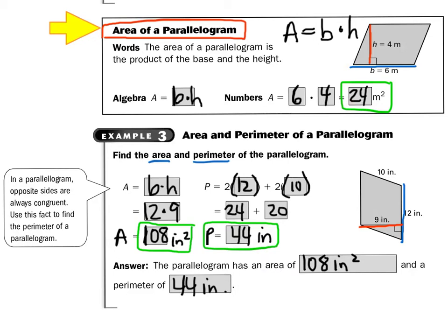Take a look at example three: area and perimeter of a parallelogram. Here's our parallelogram. For the area, it's base times height. The base — in blue — is 12, and the height — in red — is 9. I know the base and height because I look for that right angle symbol. So the area is 12 times 9, which is 108 square inches. Remember, area is always labeled in units to the second power.